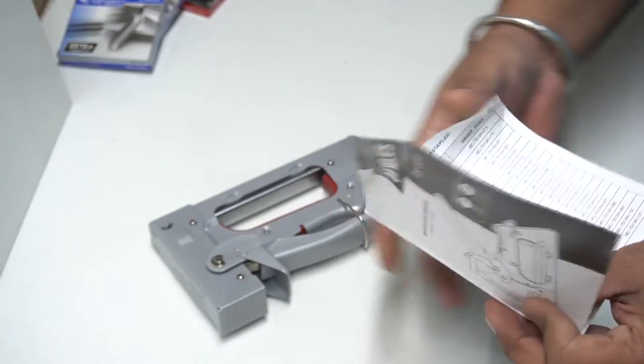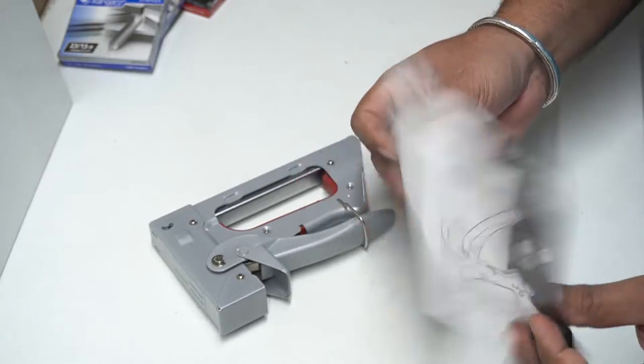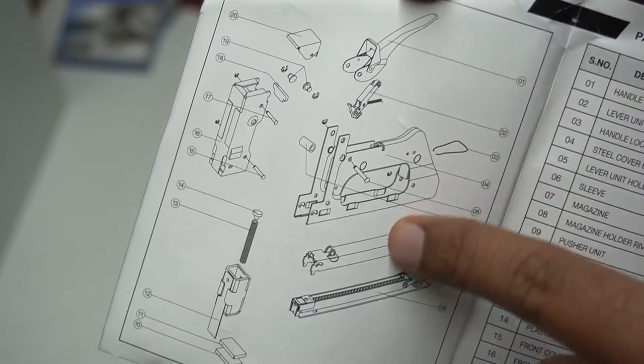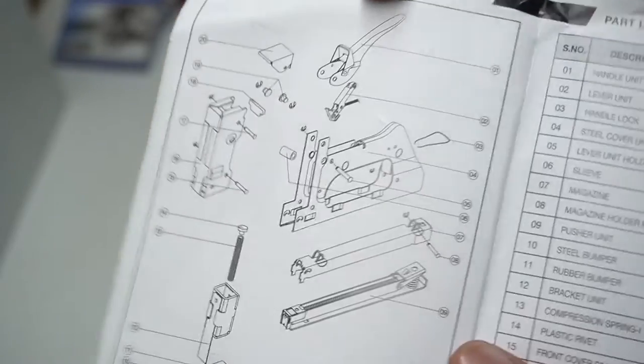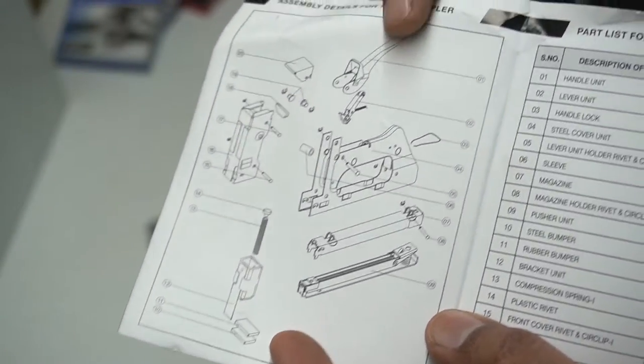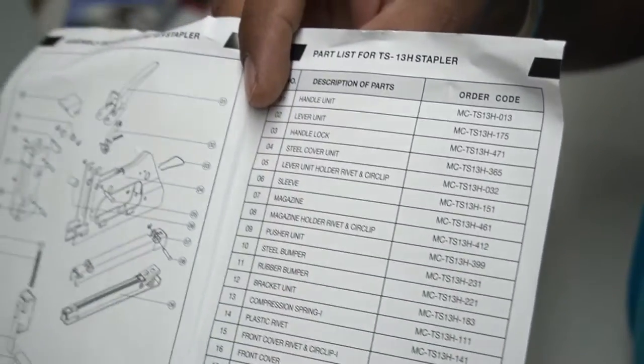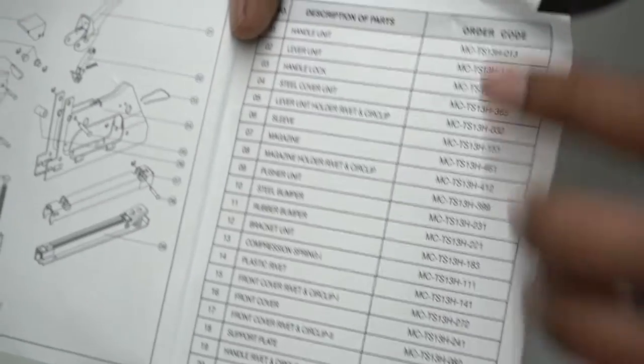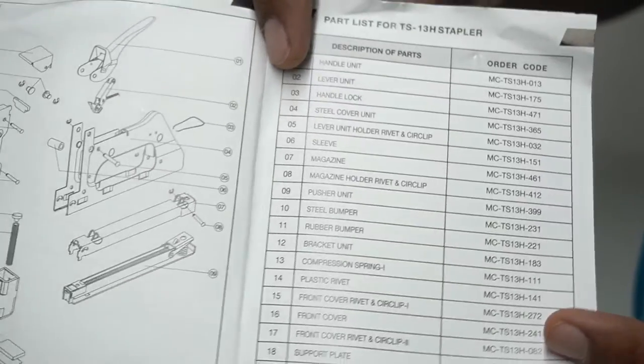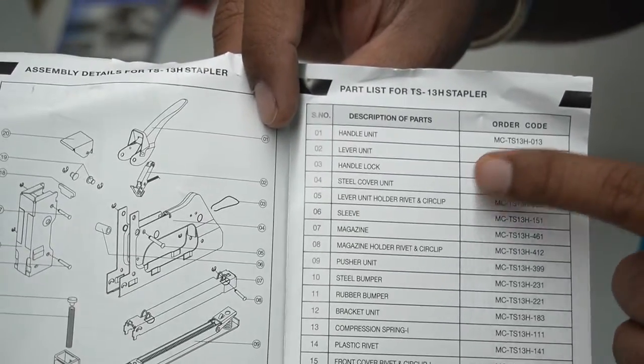On the user guide, there is an exploded view of the tool, and on the right side, there is a part description. If you want any spare part for this item, that is also available. Each part of the tool has a specific code name so you can easily get that spare part if something goes wrong.